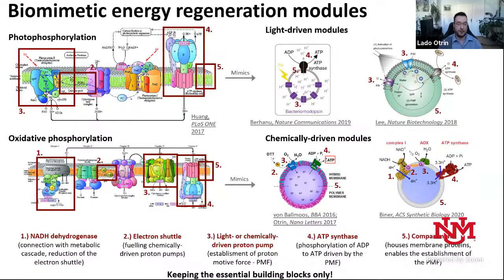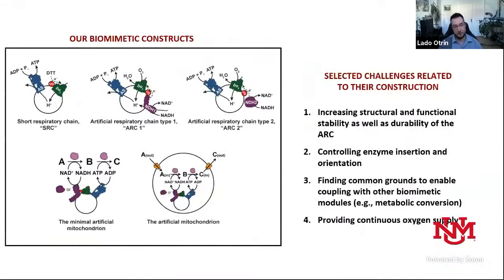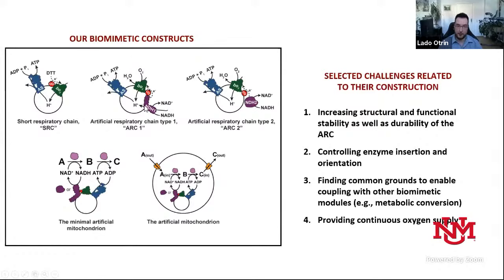What exactly are we building? If we look at the enzymatic composition, we are building artificial respiratory chains as our energy module. The most basic version requires the essential components: ATP synthase, vesicle, and the proton pump. In the next step, we add NADH dehydrogenase, which enables us to connect this module to metabolism.